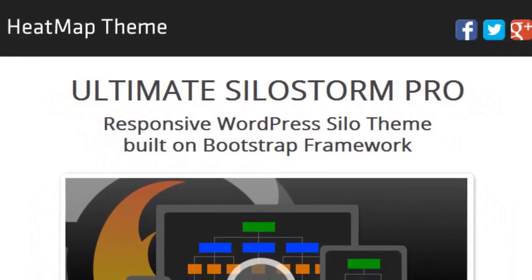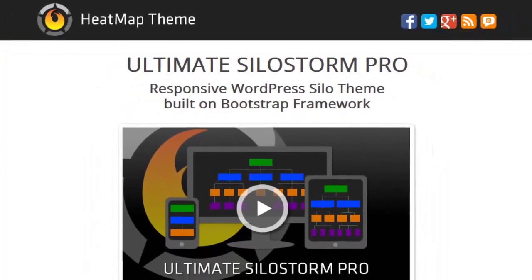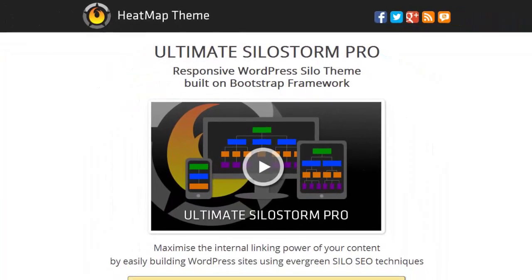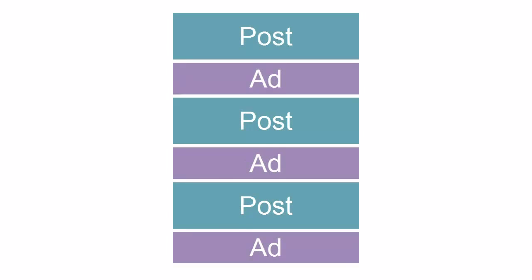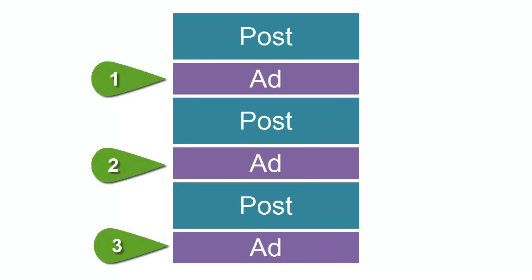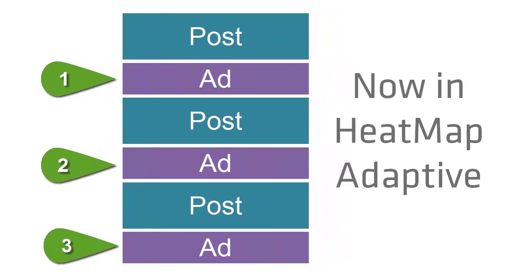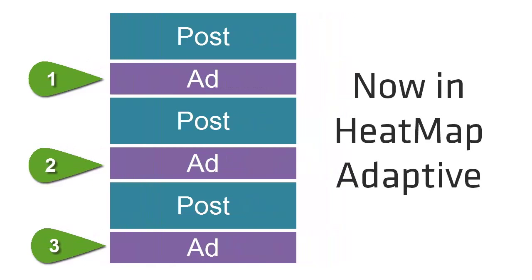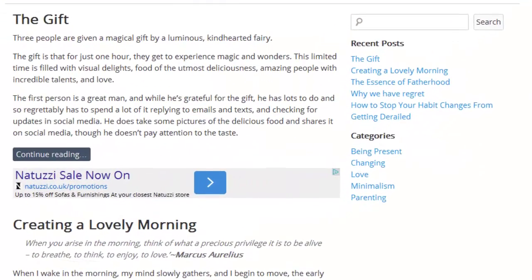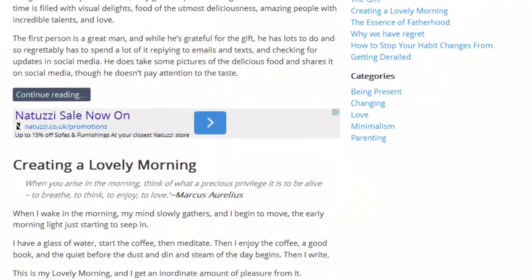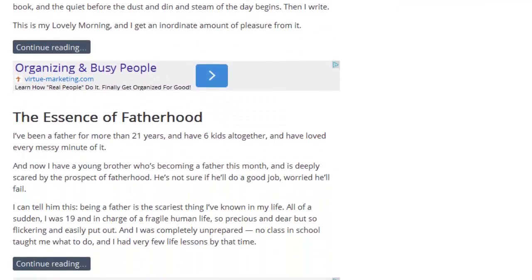As you're probably aware, a few months ago we released Ultimate SiloStorm Pro, and one of the great new features included in that theme is the ability to insert AdWidgets directly between the first three posts in a blog. I've now added the same capability to Heatmap Adaptive version 1.43. As you can see, this blog has got ads placed between the first three posts.